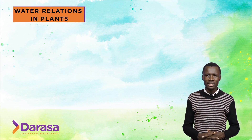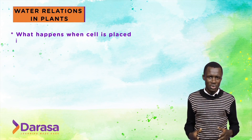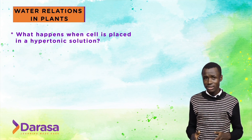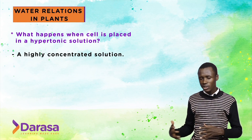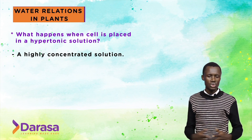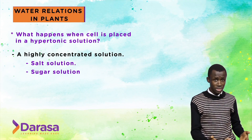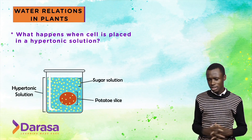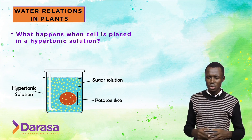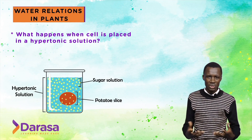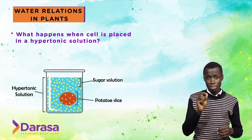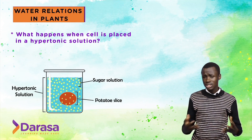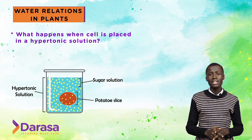Now, what exactly happens when a plant cell is placed in a hypertonic solution? A hypertonic solution is a concentrated solution — a highly concentrated solution. Good examples include a salt solution or a sugar solution. A practical example is taking a potato cube and placing it in a highly concentrated sugar or salt solution.